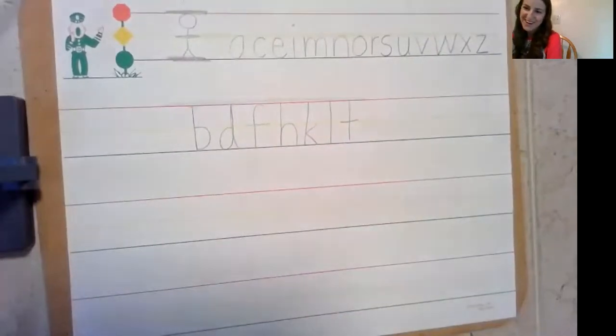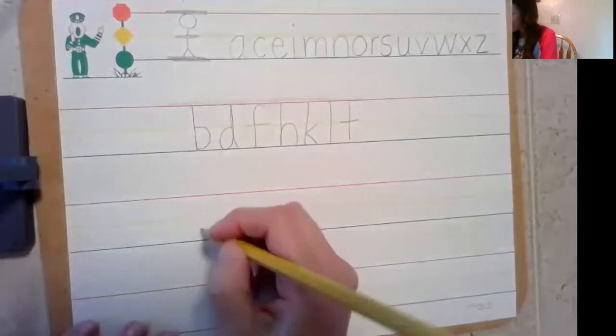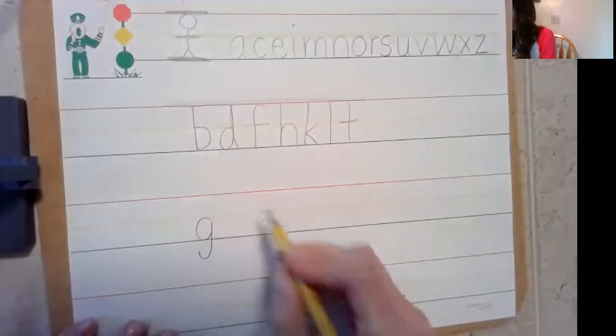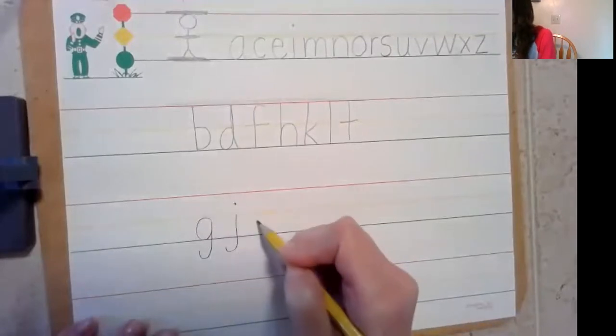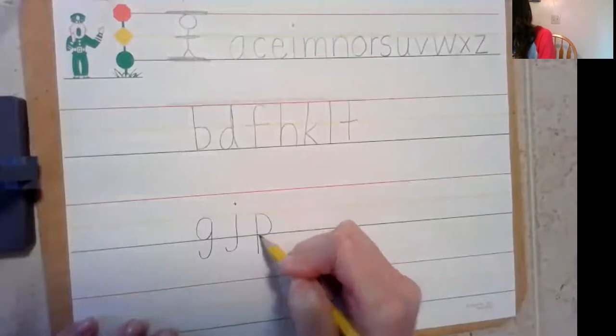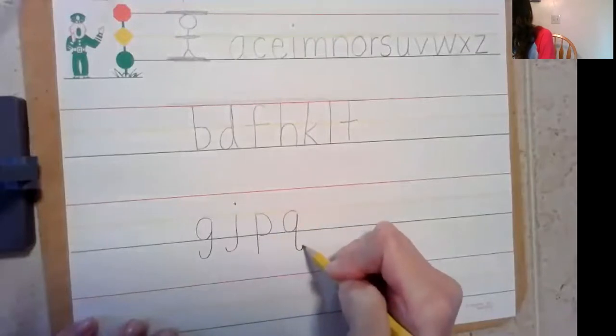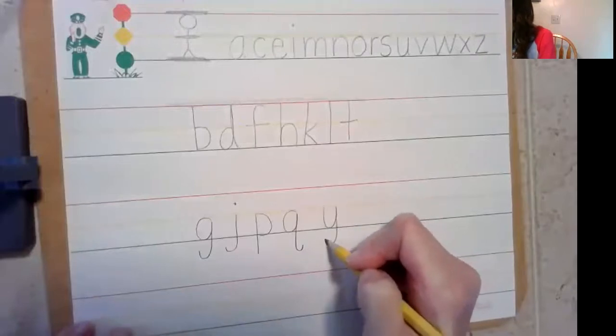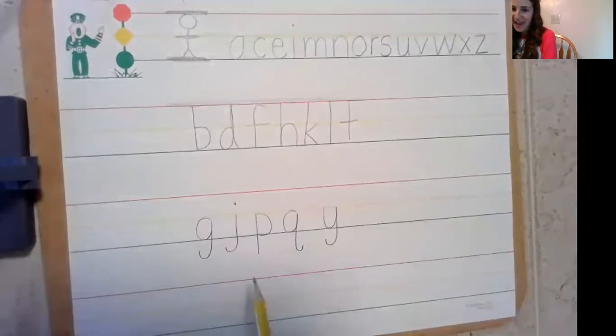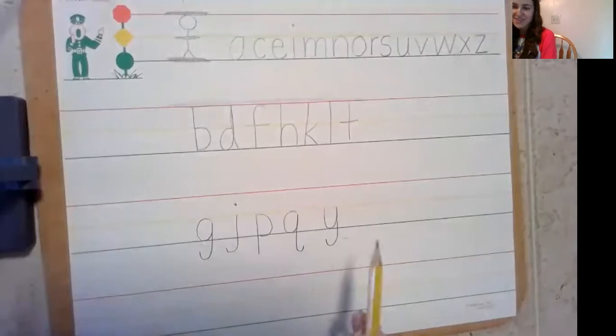And then the last group of letters that we're gonna go over are your favorite. I know when we do morning message or when we're writing, you love these letters. So we have G, J, P, Q, and Y. And those letters even go down past the footline. And we like to say that those go down in the basement.